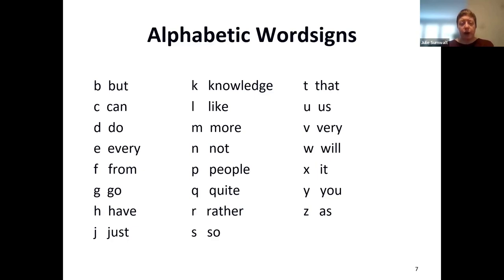I'll go through the alphabetic word signs quickly: D for 'do,' E for 'every,' F for 'from,' G for 'go,' H for 'have,' J for 'just,' K for 'knowledge,' L for 'like,' M for 'more,' N for 'not,' P for 'people,' Q for 'quite,' R for 'rather,' S for 'so,' T for 'that,' U for 'us,' V for 'very,' W for 'will,' X for 'it' — one of the only two that don't correspond to the letter — Y for 'you,' and Z, which also doesn't correspond to the letter Z at all, stands for the word 'as.'